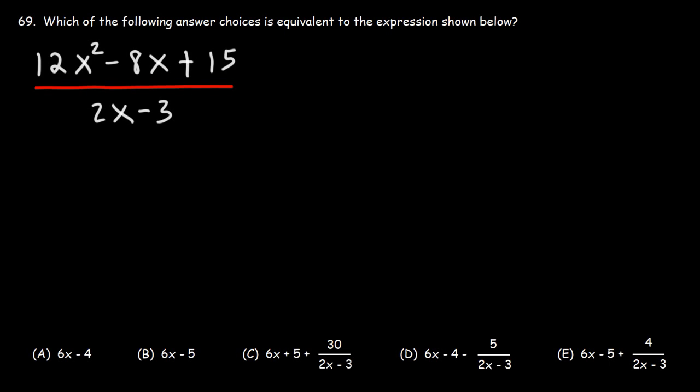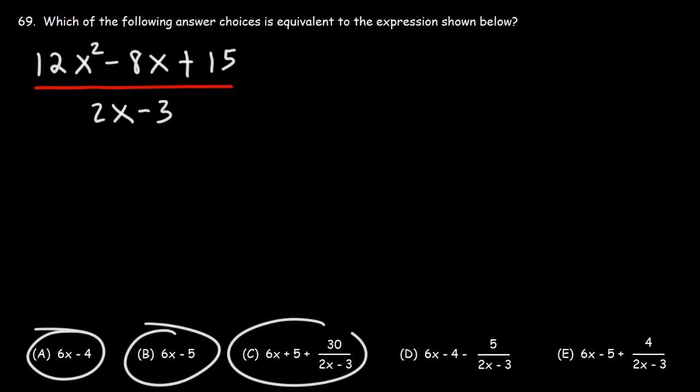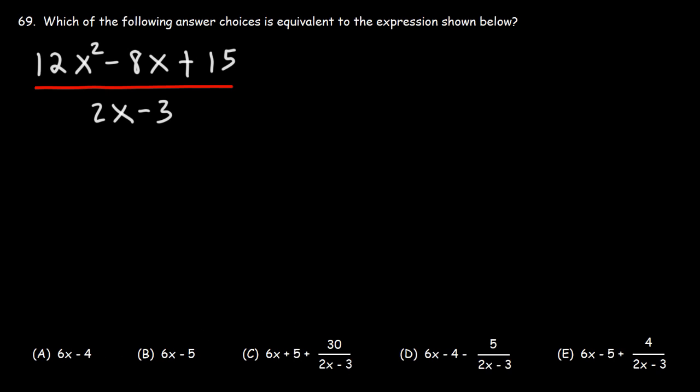Number 69. Which of the following answer choices is equivalent to the expression shown below? We have 12x squared minus 8x plus 15 divided by 2x minus 3. Is that equivalent to answer choice A, B, C, D, or which one?